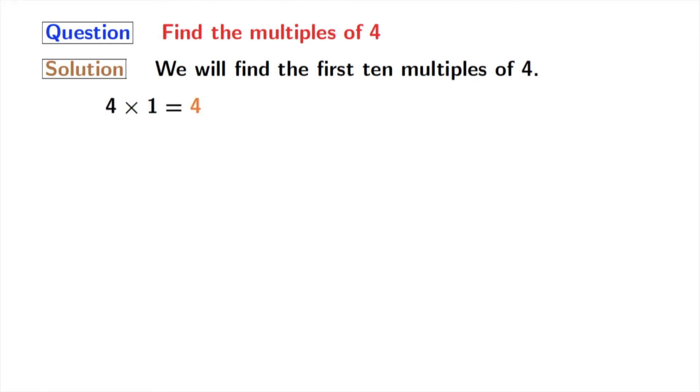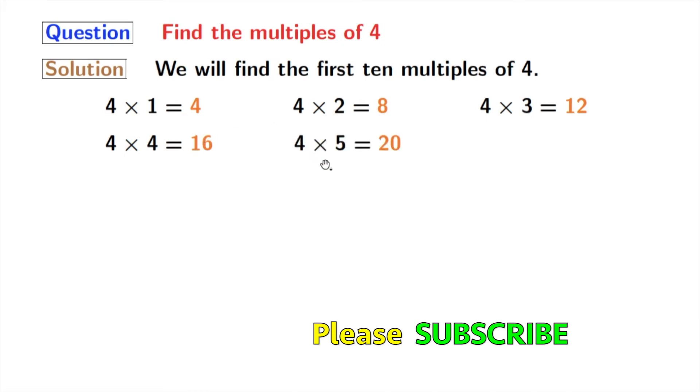And we know that multiplying 4 with 1 we get 4. Multiplying 4 with 2 we get 8. Multiplying 4 with 3 we get 12. Multiplication of 4 and 4 gives us 16. Multiplication of 4 and 5 gives us 20. Multiplication of 4 and 6 gives us 24.